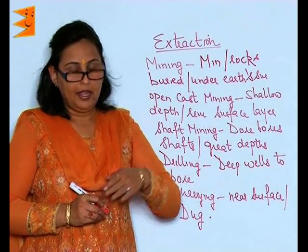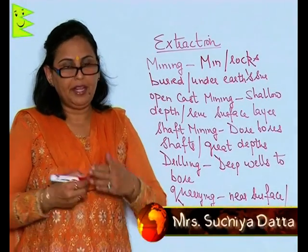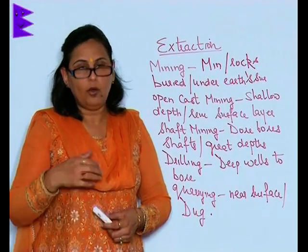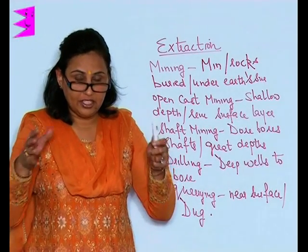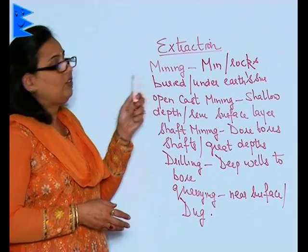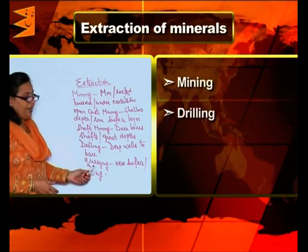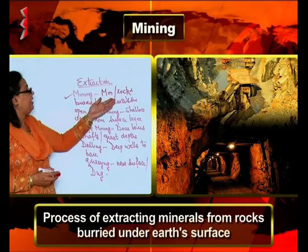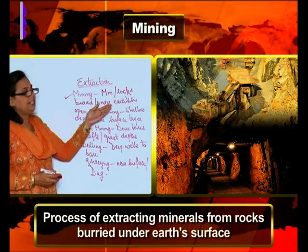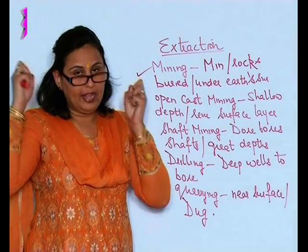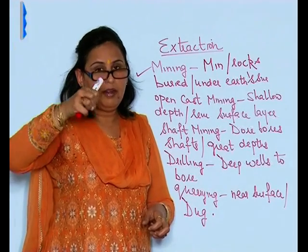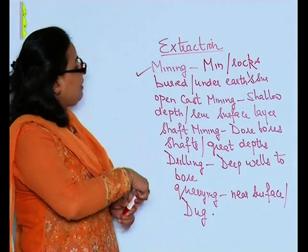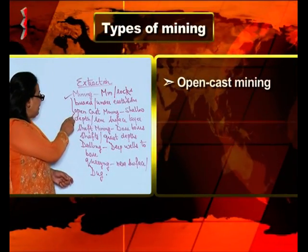Minerals lie under the surface of the earth, sometimes very close to the surface and sometimes deep inside. We have to extract these minerals for usage, and extraction is done by three ways: mining, drilling, and quarrying. Mining is the process of extracting minerals from rocks buried under the earth's surface, and it is of two types: open cast mining and shaft mining.